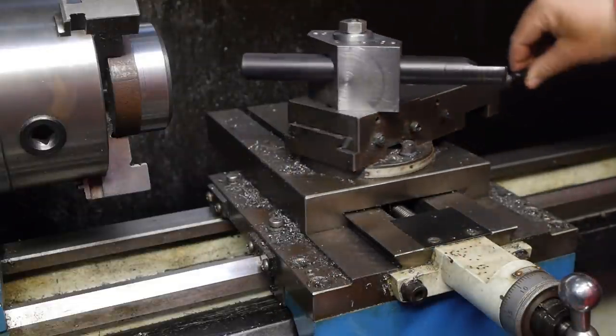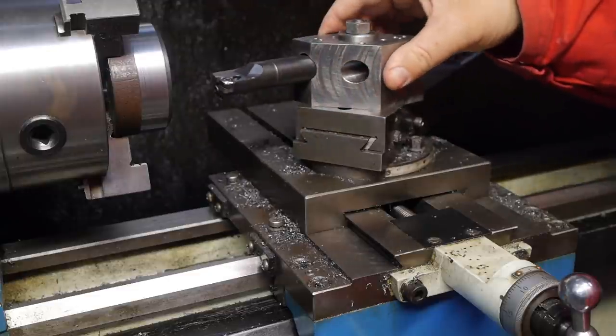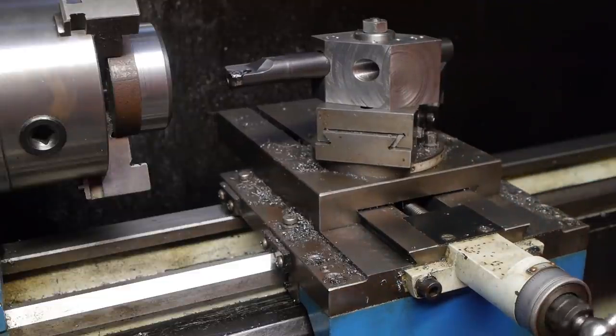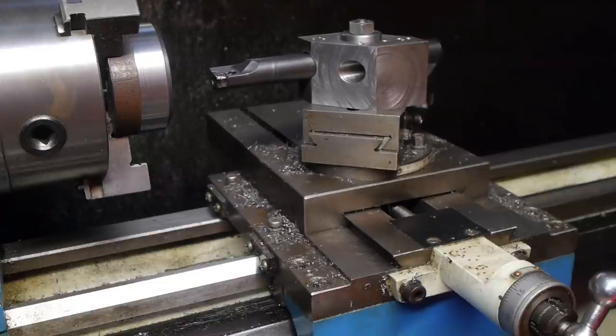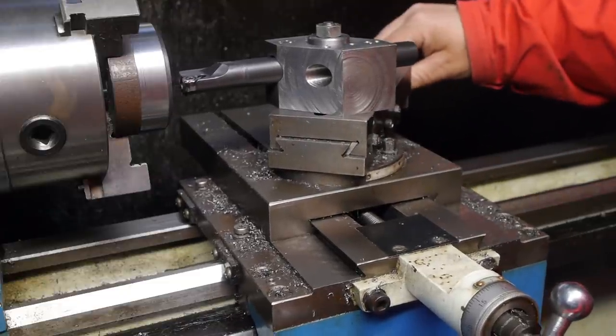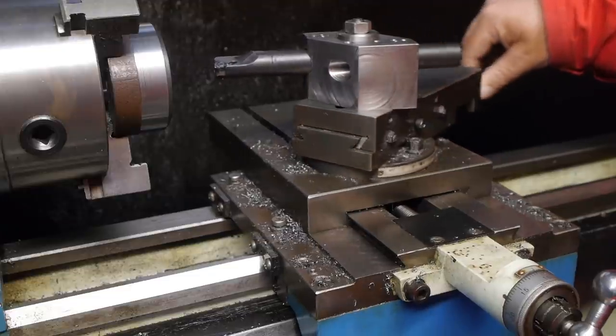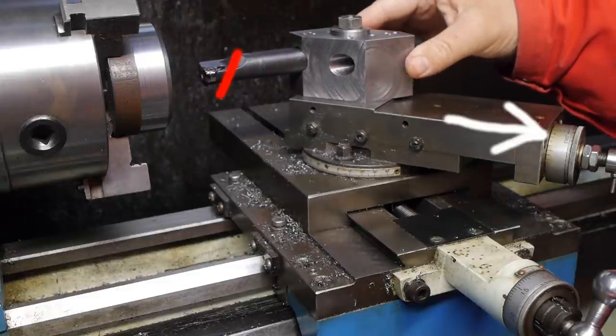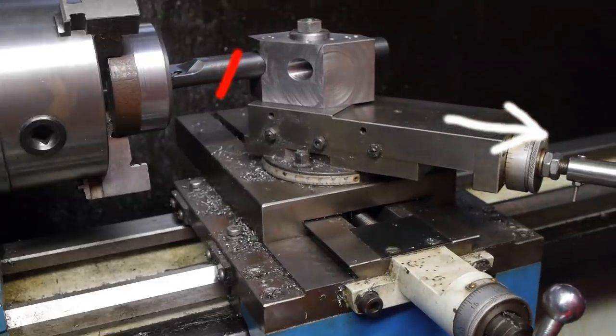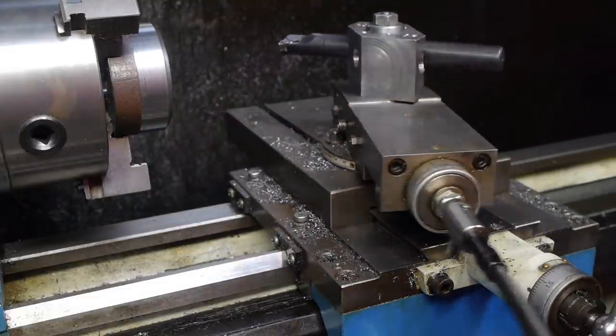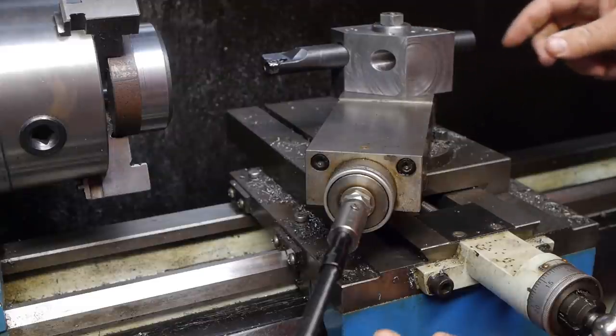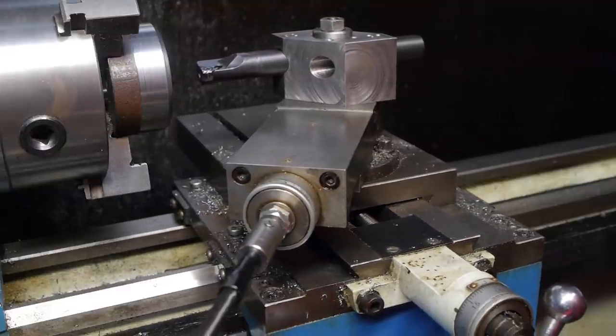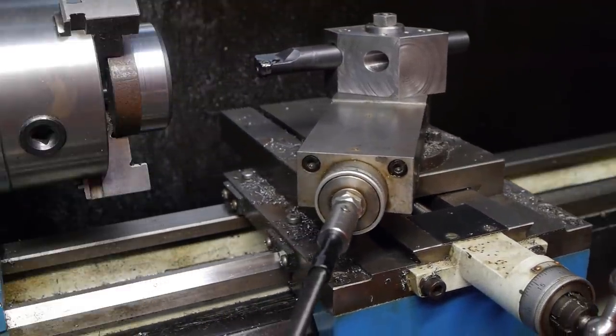Next I need to set up the angle on the compound slide. I could set the compound to the rear but I don't have enough cross slide travel and the dial would be hard to read. Setting it to the front means cutting on the wrong side of the insert. I've decided to set the compound to the left. This will require more tool overhang but the dial will be easy to read and I'll be cutting on the correct side of the insert.